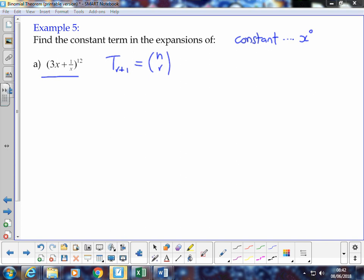Which is n choose r, x to the n minus r, and y to the r. n is 12, so we can say that we've got 12 choose r. Our first term is 3x, so it becomes 3x to the power of 12 minus r. Our second term is plus positive 1 over x. I'm going to write it as x to the power of negative 1 to the power of r, because I know I'm going to be combining these indices in a short time.